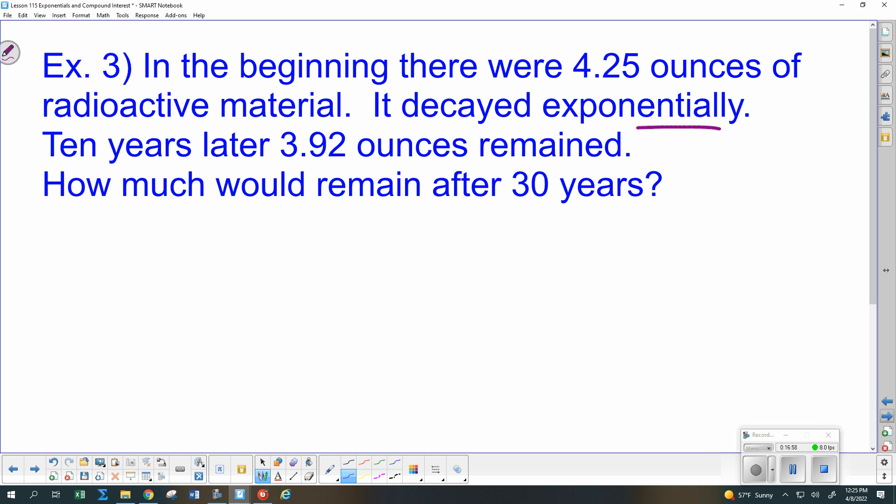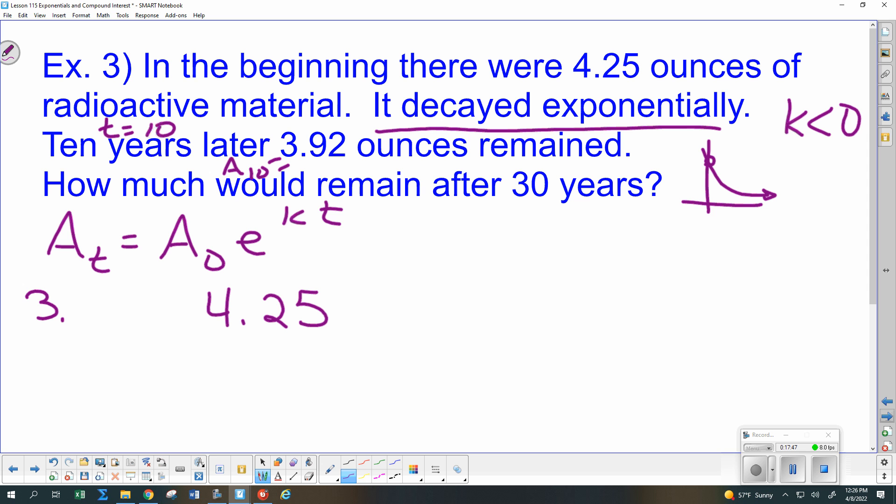Next one. This time we are going to do exponential decay. So this one should be doing something like this. And we should get a negative K this time around. If not, something's wrong. So we start out with our formula. Amount at time T is A0E to the KT. Where should I put my 4.25? Caleb? Because A0 means my amount at time 0 when I'm starting. So we're going to put the 4.25 right there. 10 years later, so we know our time is T. And then this will be our amount at time T. So we'll put 3.92 equals that 4.25. E to the K times 10.